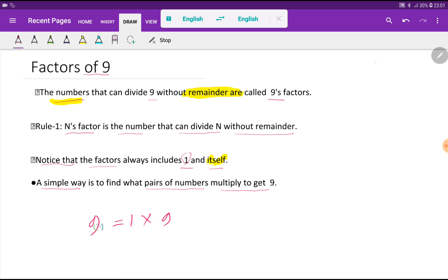Look at here. According to this definition, if you divide 9 by 1, you will get 9. If you divide 9 by 9, you will get 1. So 1 and 9 are the factors of 9.